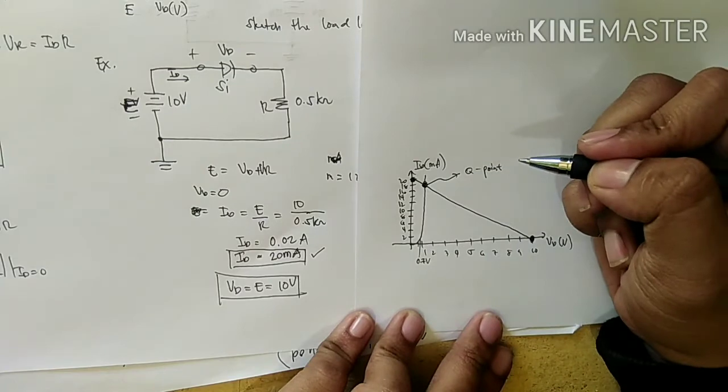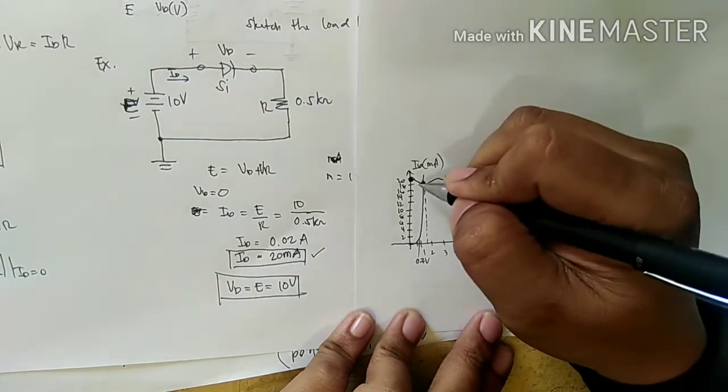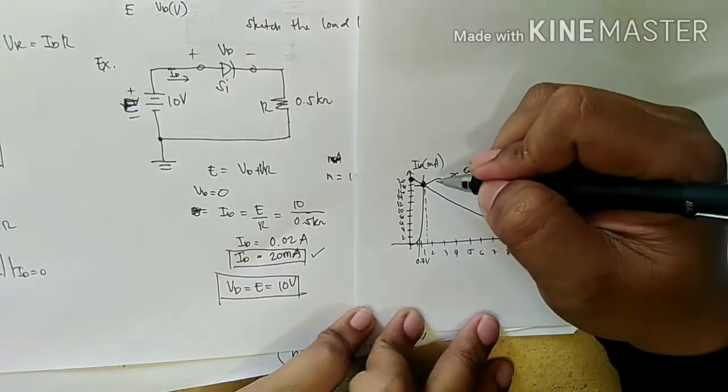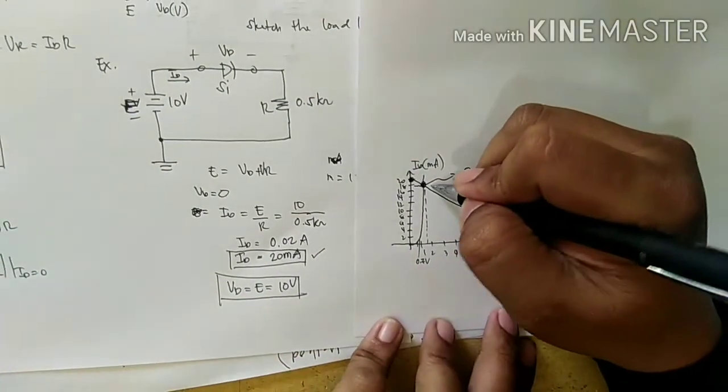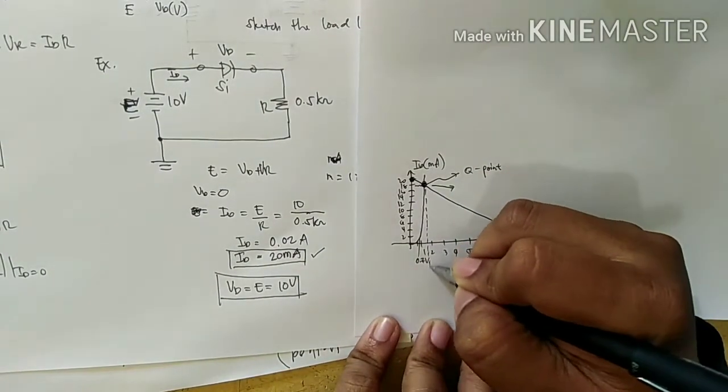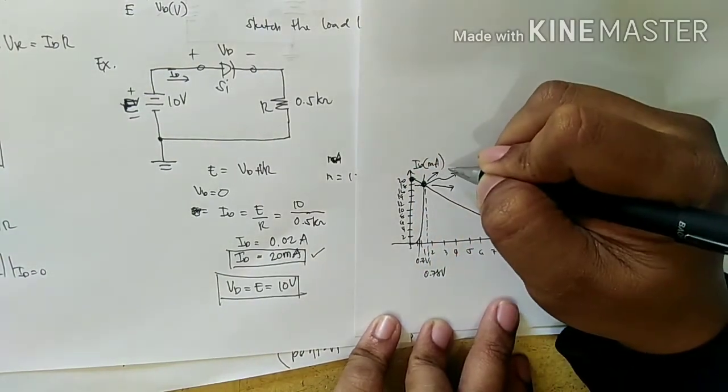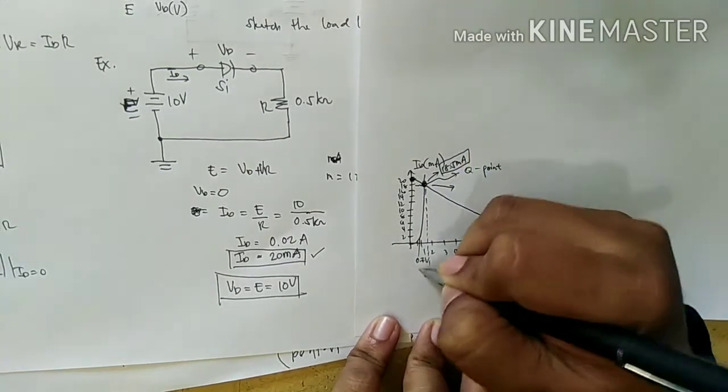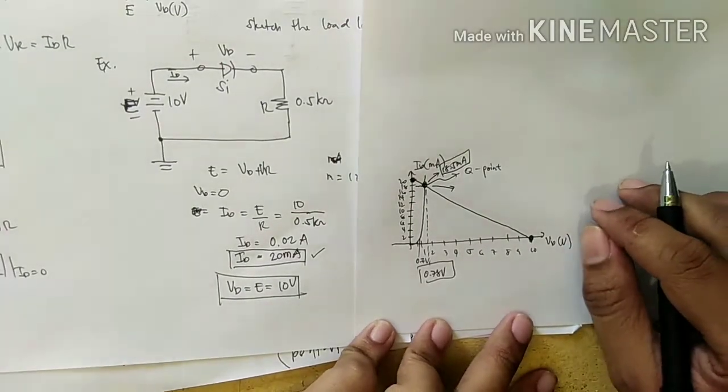In order to determine the Q point, you need a very accurate drawing or a graphing paper in order to know this point. According to the book, this is equal to 0.78 volts and 18.5 milliamps. That is the Q point.